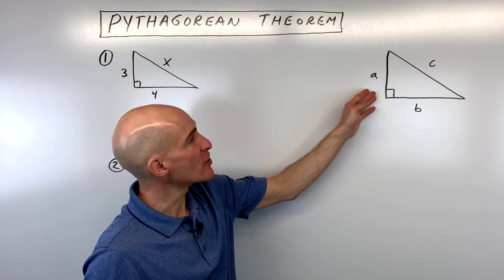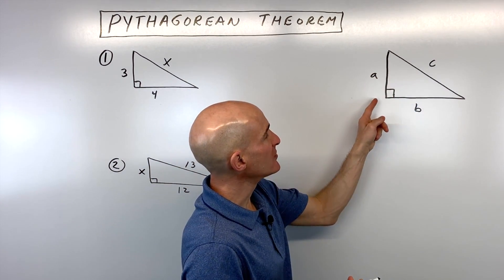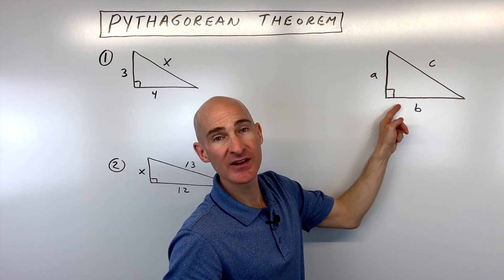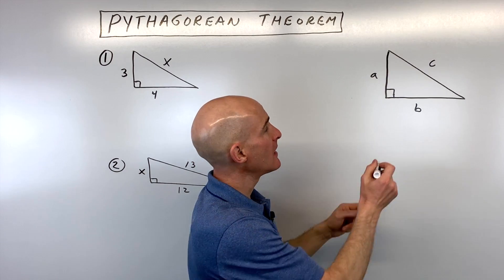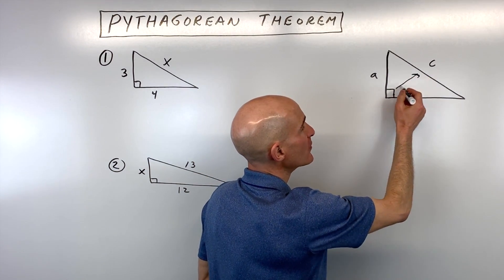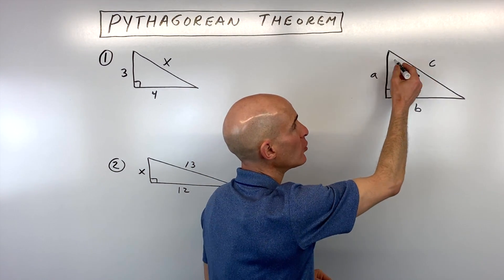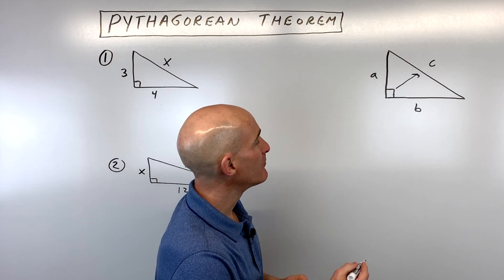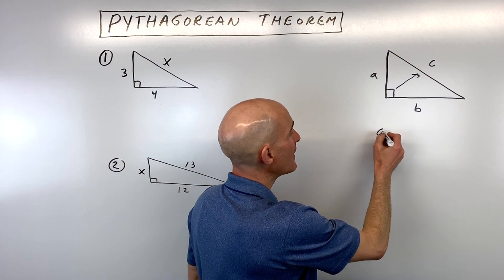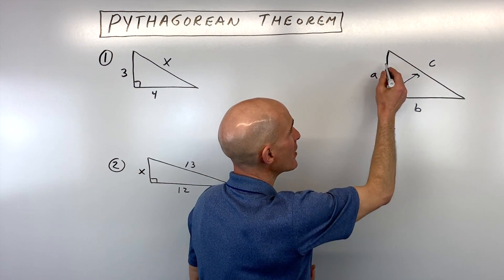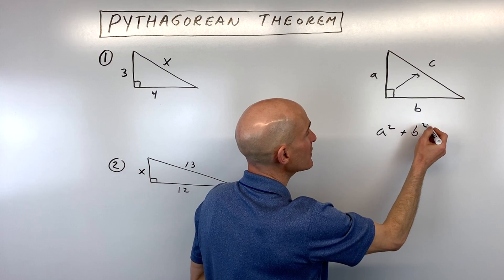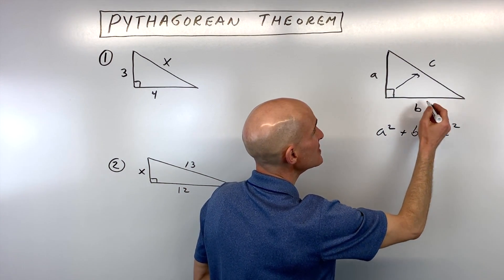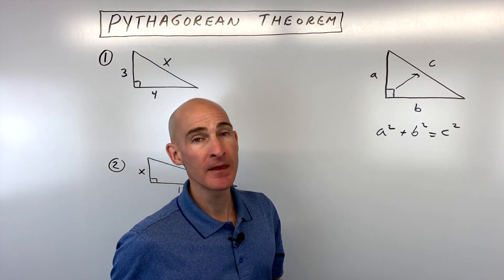A quick refresher here: when you have a right triangle, you have these two sides that make up the right angle. These are called the legs or the sides. And the side that's across from the right angle — that longest side — is called the hypotenuse. And the Pythagorean Theorem tells us that a squared, meaning this leg squared, plus b squared, this leg squared, is equal to c squared, the hypotenuse squared.